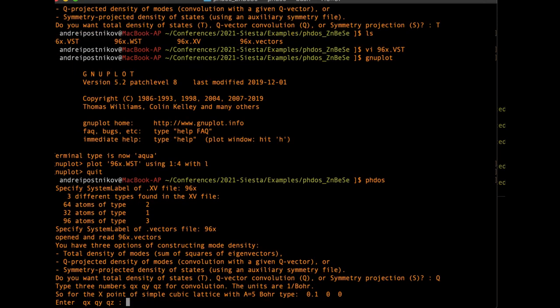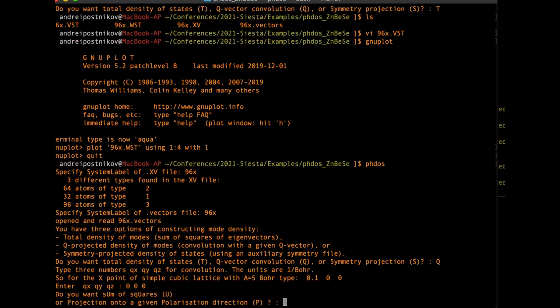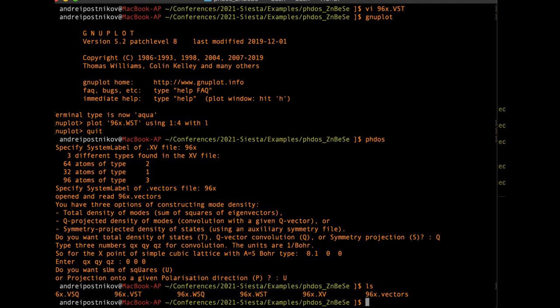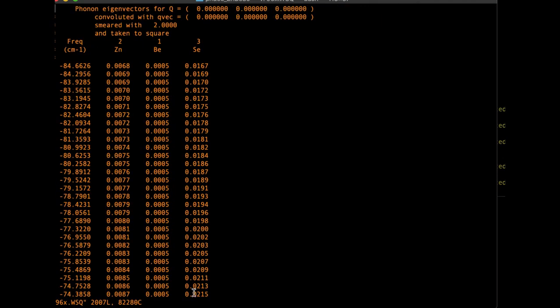The script asks me which value of Q I want to have for the projection. So I opt for central zone, I pass 0, 0, 0. And then another choice. Either I can go further and project into longitudinal and transversal, which I don't want to do for the moment. So I just select the sum of squares. Then the calculation is done and I get two more files which are similar to the one we have seen before, but now they represent the projection.